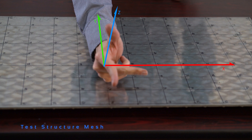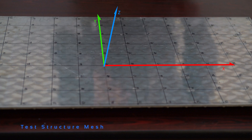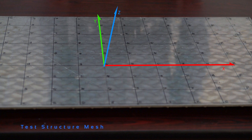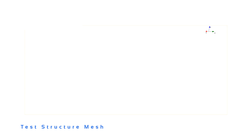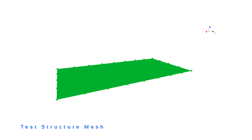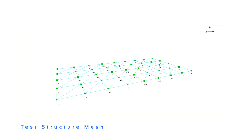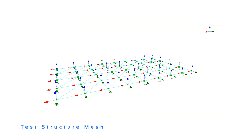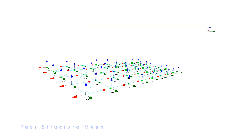Usually the structure under test is more complex than a simple plate. The modal software's geometry features handle this by using components. Each component has its own origin and Euler angle, ensuring each component can use its own local Cartesian coordinate system for directions.